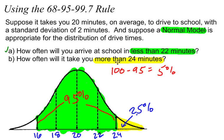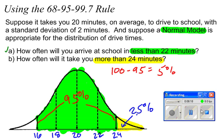So how do I figure out what percent of the time it's going to take me more than 24 minutes? Right there — 2.5%. About 2.5% of the time, it will take me more than 24 minutes to drive to school. That is how you can use the empirical rule.